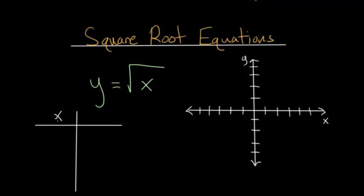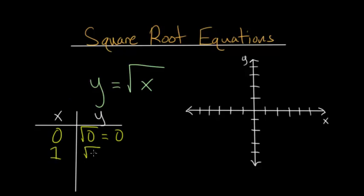We're going to pick specific x values and determine what their y values are. Starting with x equals 0: the square root of 0 is 0, since square roots ask what number multiplied by itself gives you the value inside, and 0 times 0 equals 0. For x equals 1, the square root of 1 is 1. For x equals 2, there is no rational number that when multiplied by itself gives you 2.